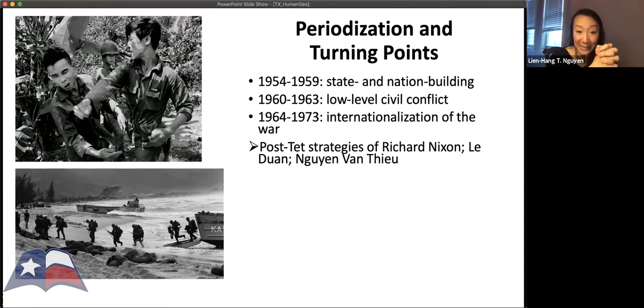All right. So 1954-59, as I said, it's really about state and nation building. I would emphasize Eisenhower's decision to replace France and Geneva as a very important highlight. Again, Les Juan's resolution 15, his first decision to put Hanoi on the road to war, ZM's anti-communist campaign. The next stage I would talk about is sort of this low level civil conflict that unfolds as both sides are picking up arms once again, and that's really takes place between 1960-1963.